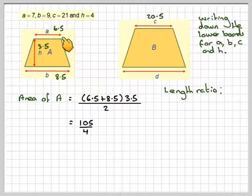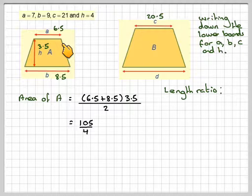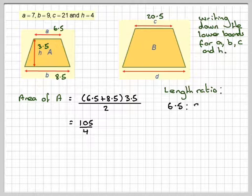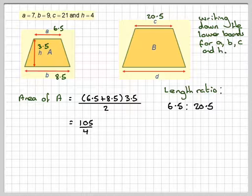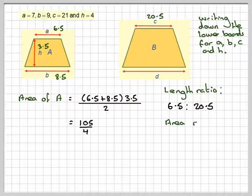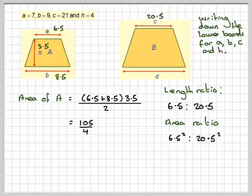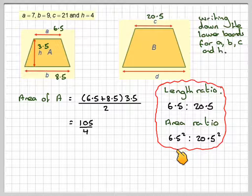Now, the length ratio. We've got two corresponding lengths, so it's 6.5 to 20.5. If you want to find the area ratio from the length ratio, you need to square, so this becomes 6.5 squared to 20.5 squared.